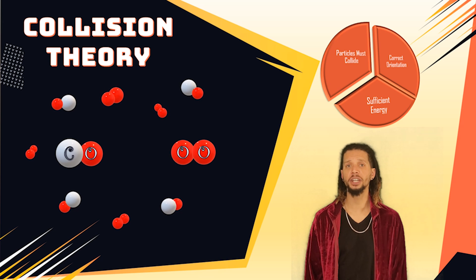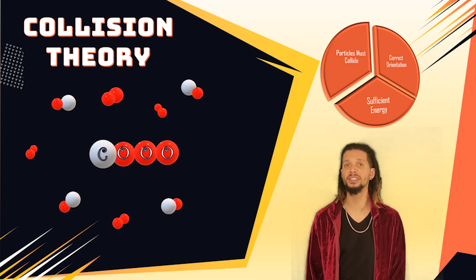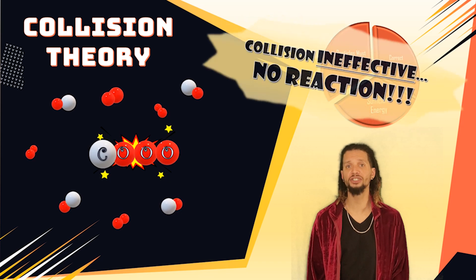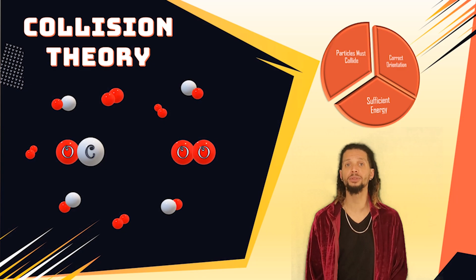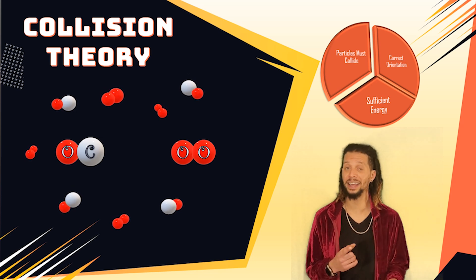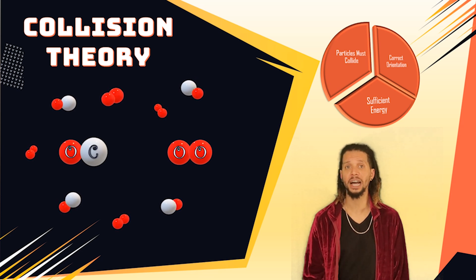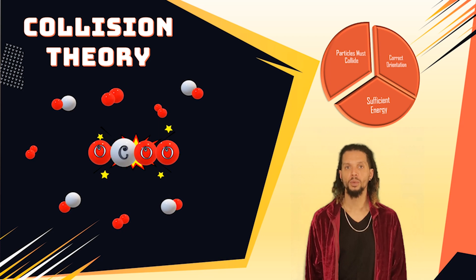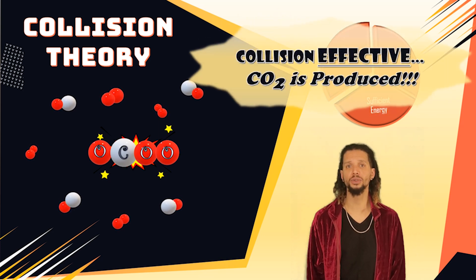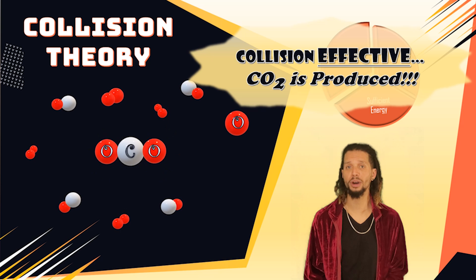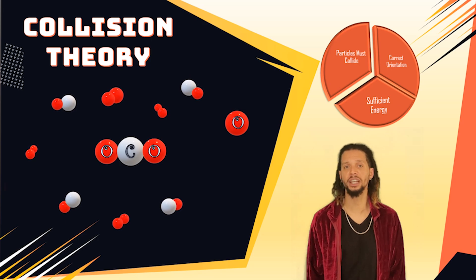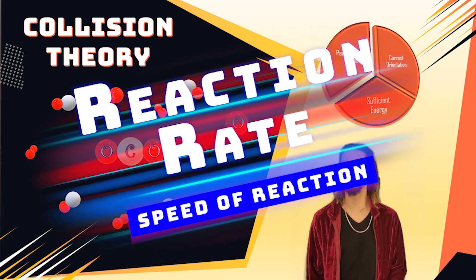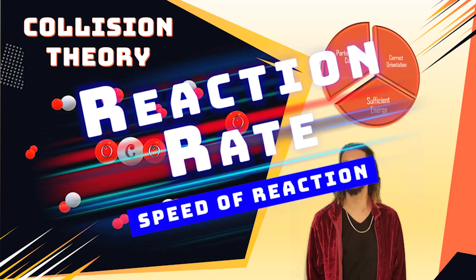The collision theory also states that the collisions must be effective, meaning for that chemical change to occur, the substances colliding must have the proper three-dimensional orientation and enough energy when they collide. Once the atoms, ions, or molecules have collided with enough energy and proper orientation, the chemical reaction can take place. But the speed, or how fast this reaction takes place, which we call the reaction rate, depends on several factors.